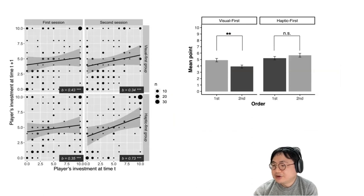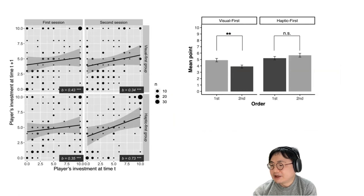Let me show you the transition of cooperation between the visual priority group and tactile priority group. Light figures show the effect of the order of investment in a single round. It was found that the investment points of the backward player were less than those of the forward player for all sessions, because the slope was less than one.